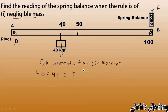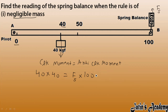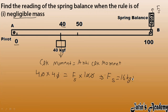For the anticlockwise moment: the spring force F acts at 100 centimeters from the hinge. We don't need to convert to meters because centimeter cancels with centimeter, giving the force in kgf. So: 40 × 40 = F × 100. Canceling zeros: 4 × 4 = 16, so the spring force F = 16 kgf when the meter rule has negligible mass.